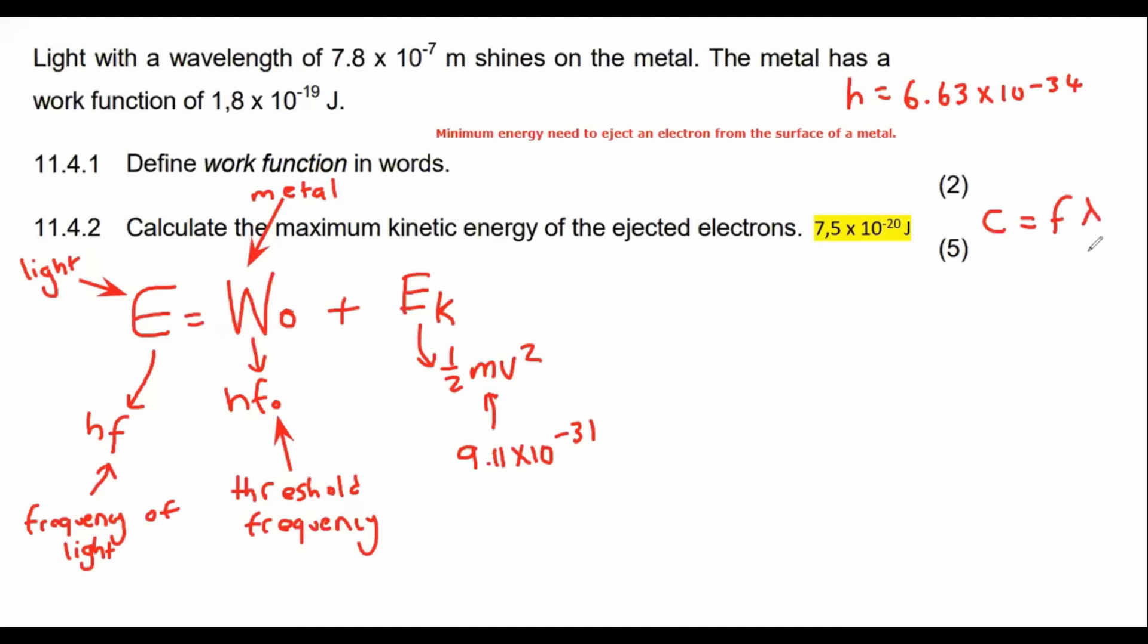Whenever they give you wavelength, then you need to get the frequency by using this formula over here. Remember that C is a constant of 3 times 10 to the power of 8.